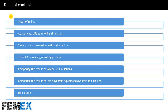This is the table of content of this video. We will talk about types of rolling, Abaqus capabilities in rolling simulation, steps that can be used for rolling simulation, 2D and 3D modeling of rolling process, comparing the results of 2D and 3D simulations, comparing the results of using dynamic explicit and dynamic implicit steps, and finally the conclusions.